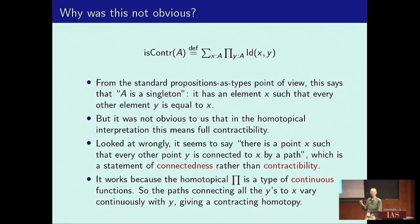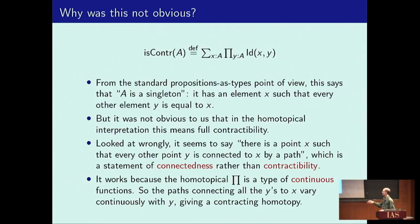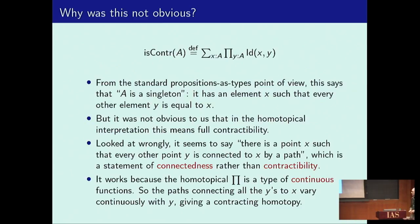But in the homotopical interpretation, if you think about it the wrong way, it seems to say there is a point X such that every other point Y is connected to X by a path, which sounds like it's saying this type is connected, not that it's contractible. That's wrong, and the reason it's wrong is because everything in type theory is represented by something, whether continuous (if topological) or functorial (if thinking in terms of groupoids and categories). This pi type — its elements are functions that assign to every Y a path, but they have to assign that path continuously or functorially.